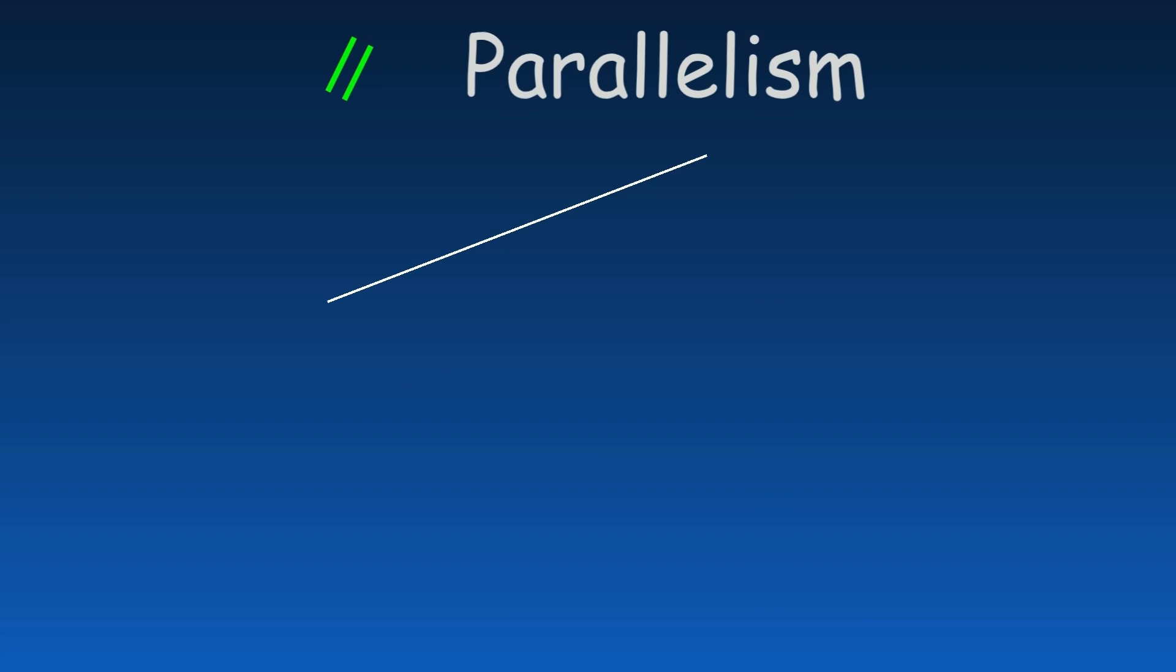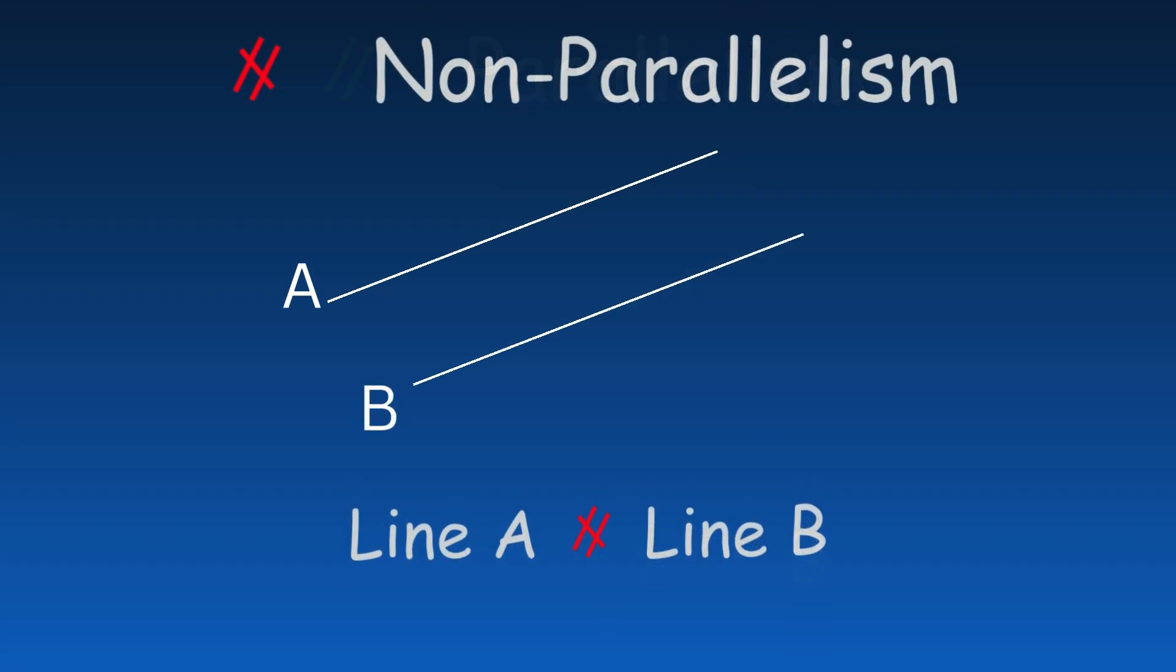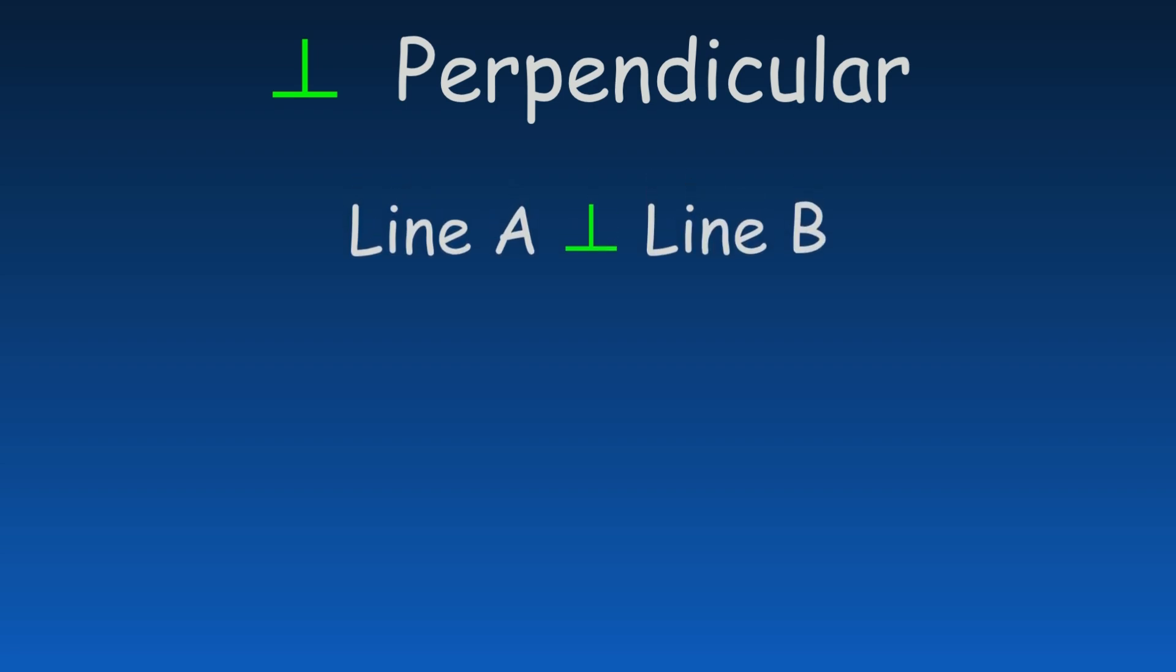A single vertical line represents divisibility. A crossed line denotes non-divisibility. Two parallel lines indicate parallelism, while crossed parallel lines show non-parallelism. An upside-down t denotes perpendicularity, and in some contexts, it may also indicate that two numbers are coprime.